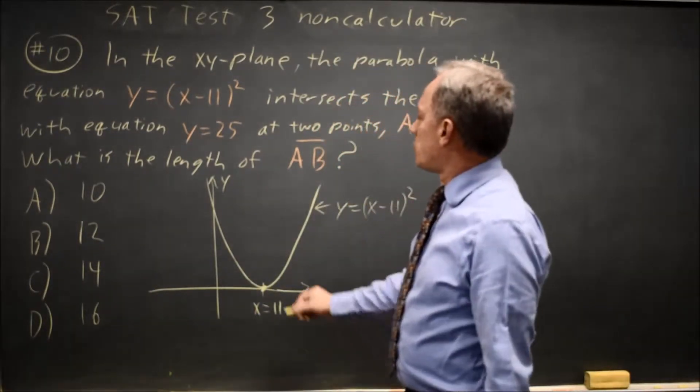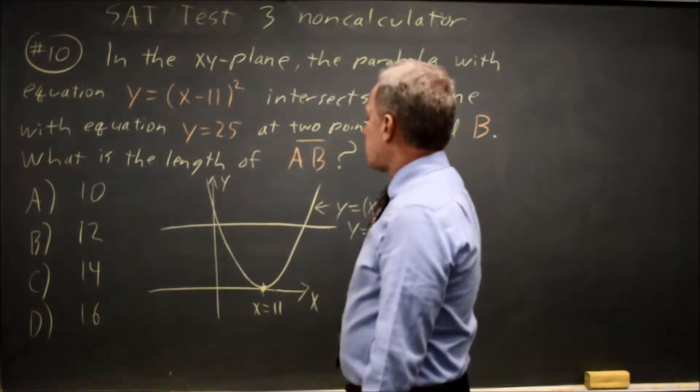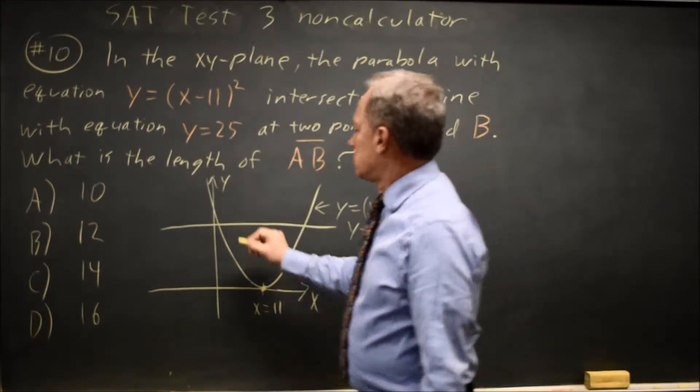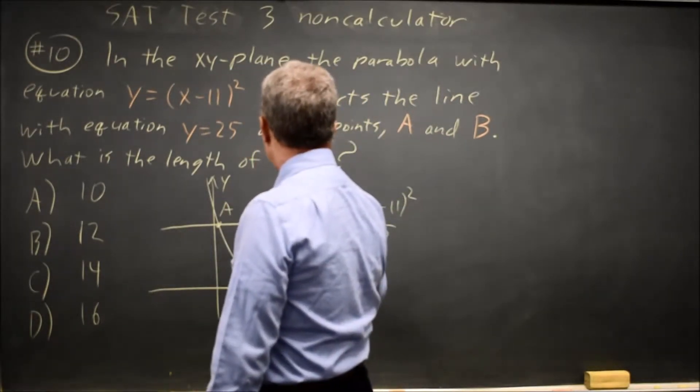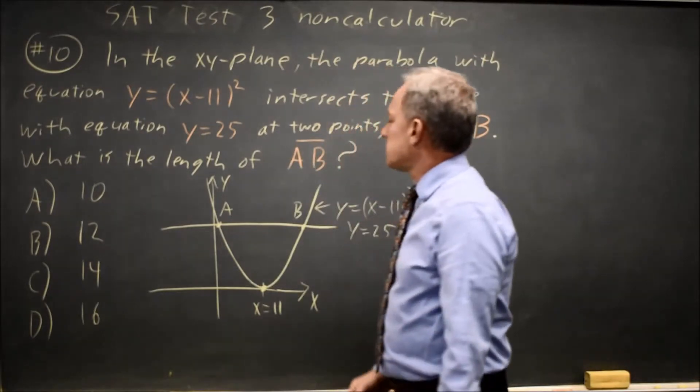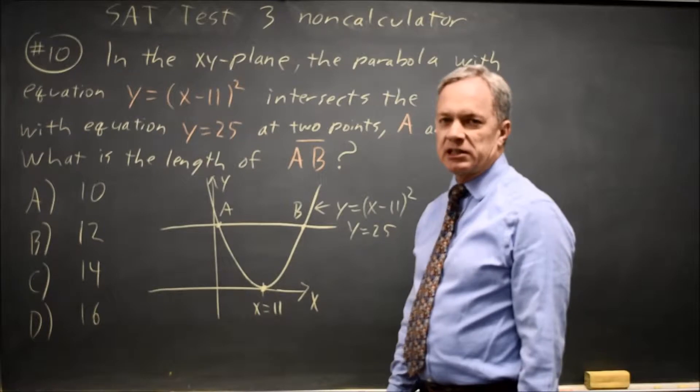And the graph of y equals 25 is a horizontal line, so points A and B. The distance is the difference between the x values at the two points of intersection.